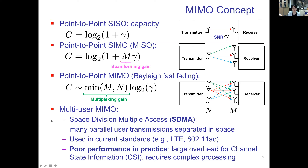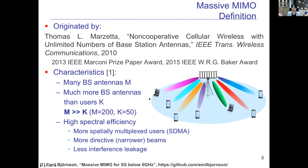Such multi-user MIMO methods are used in current standards. However, in practice the achieved performance is quite poor, because good performance really requires accurate channel state information, it also needs very large overhead for channel state information acquisition, and it also requires quite complex signal processing.